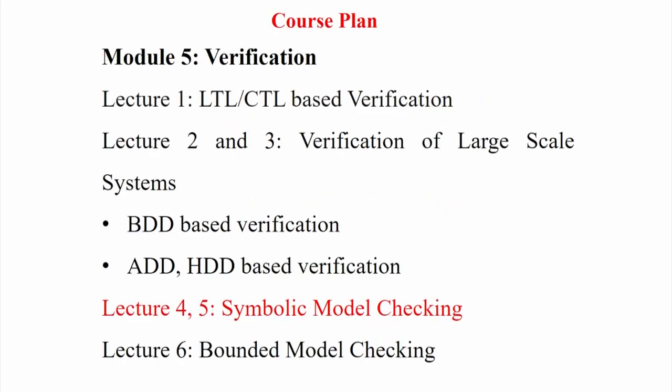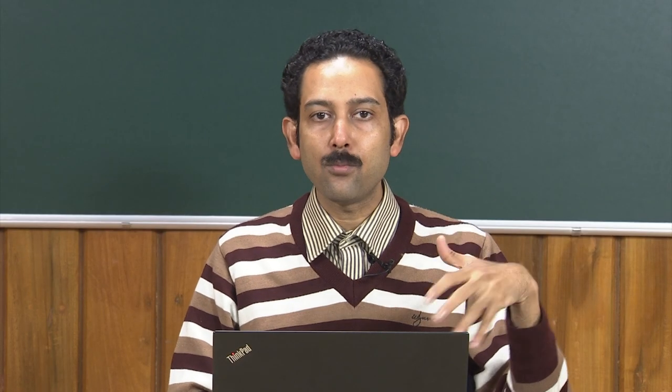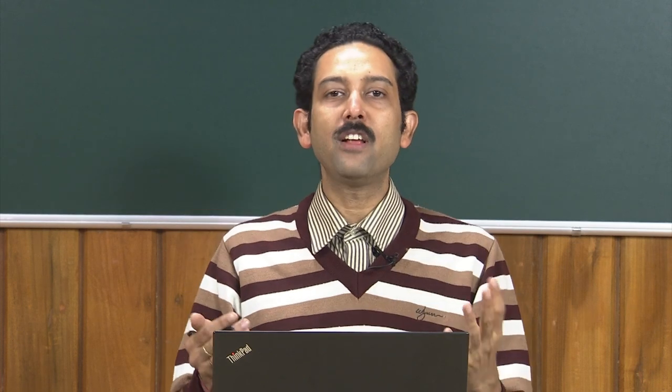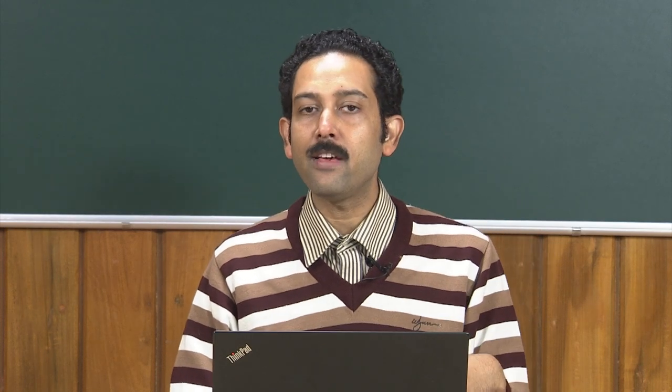Welcome again to the course on Optimization Techniques for VLSI circuits. We are going through the module on verification. In the last two lectures, we have seen that the major problem for any kind of verification or handling any kind of systems where you have to go for a state space model is that the size of the state space becomes so large—it tries to blow up in the order of exponential complexity in the number of system variables. That was the major bottleneck for testing as well as verification.